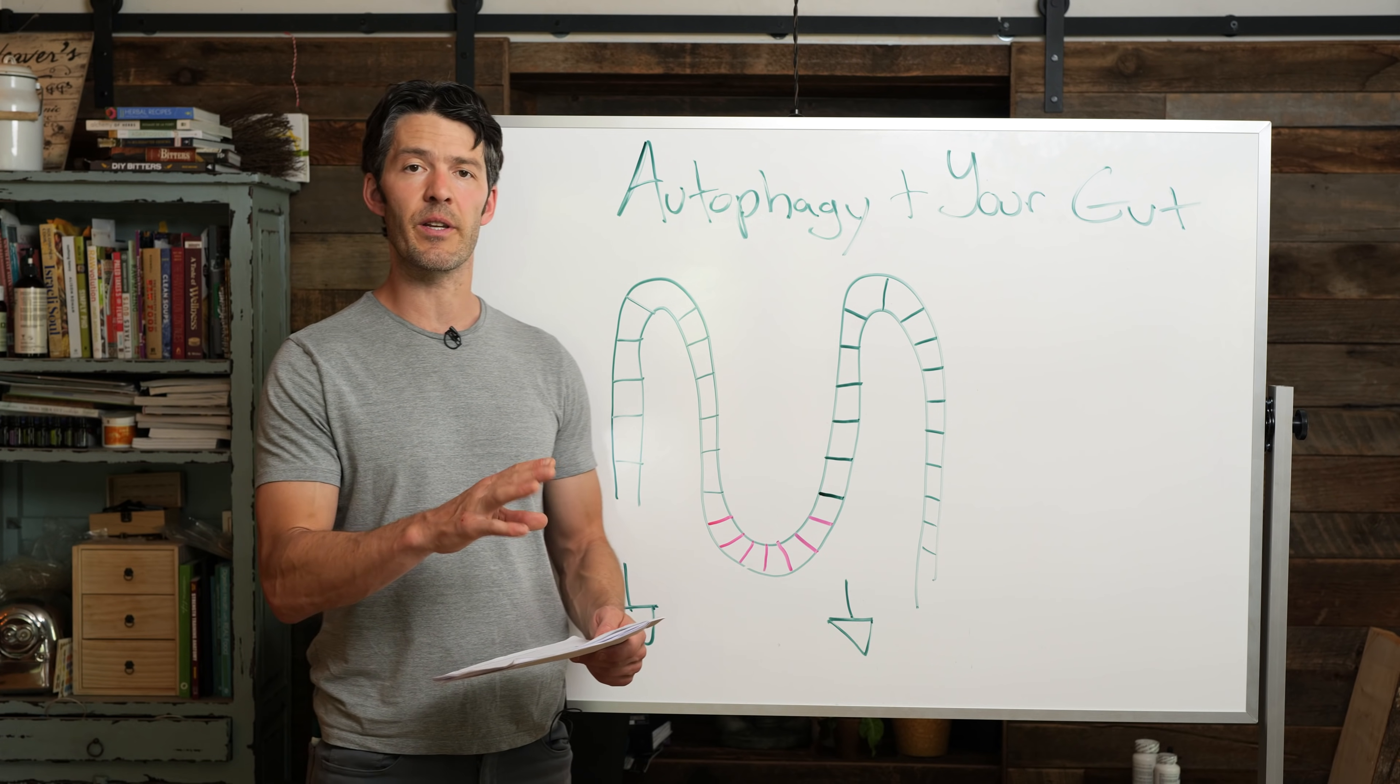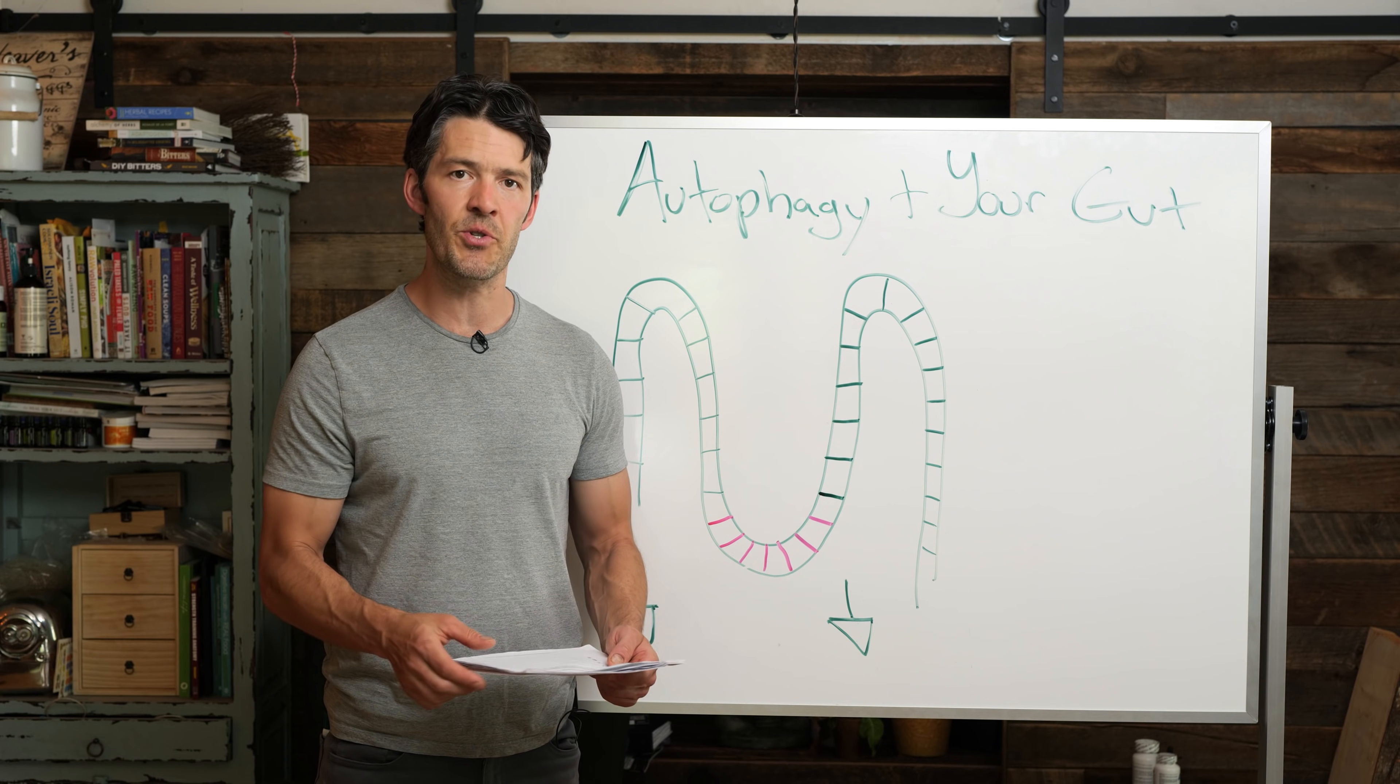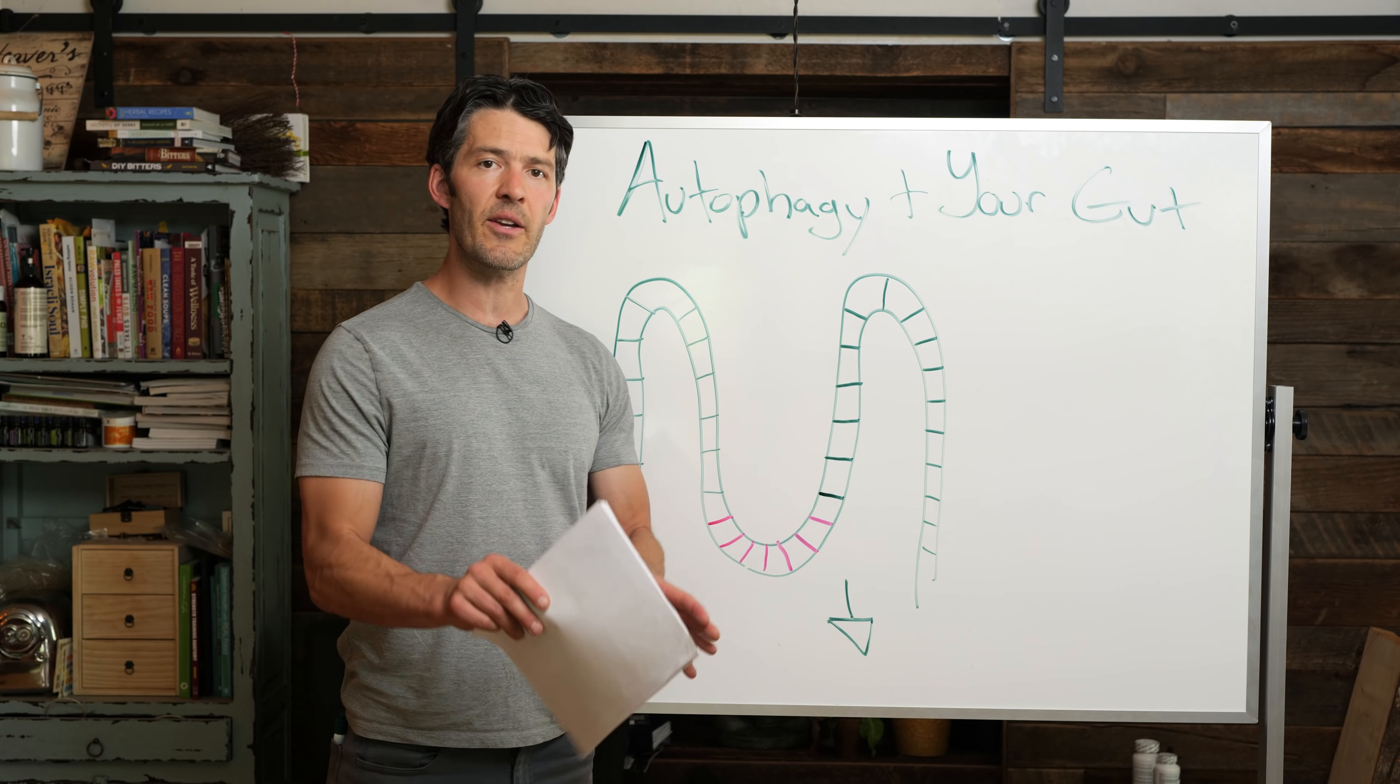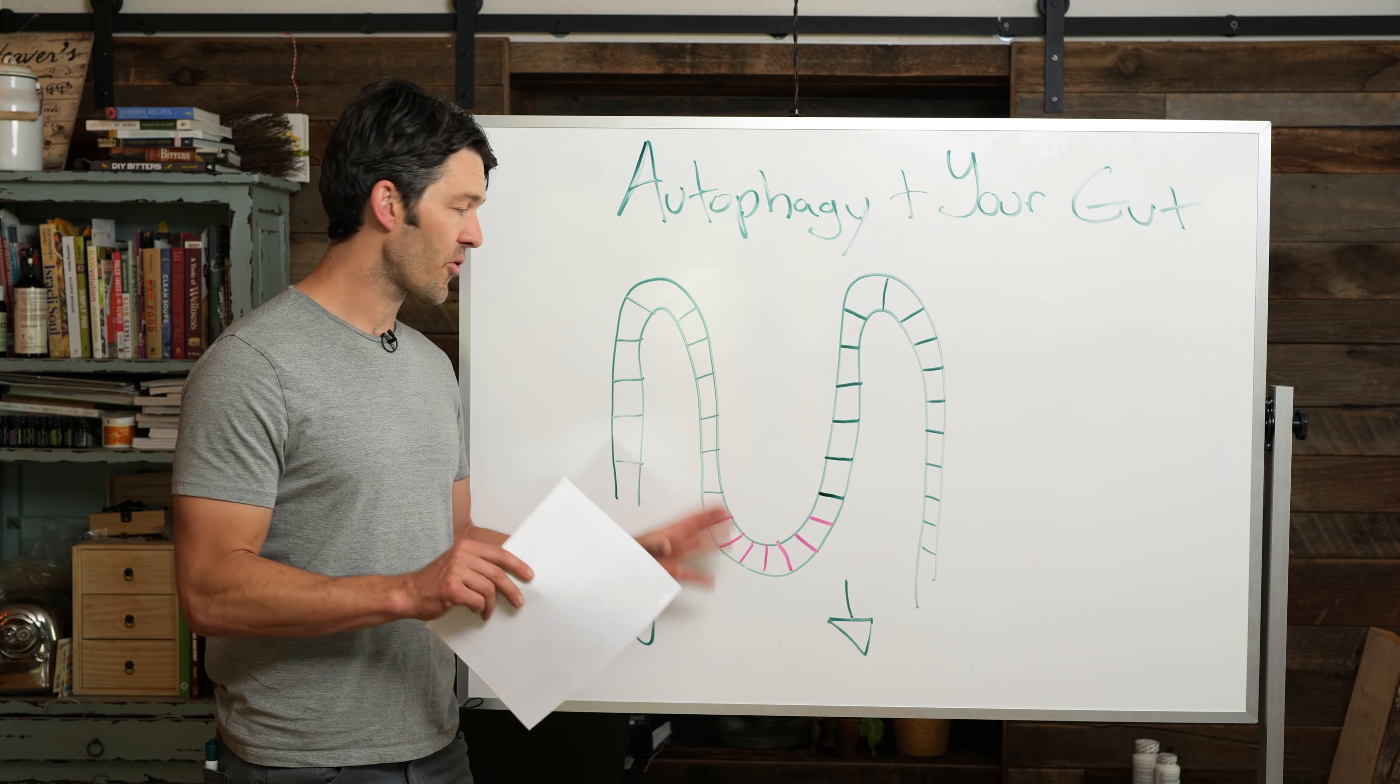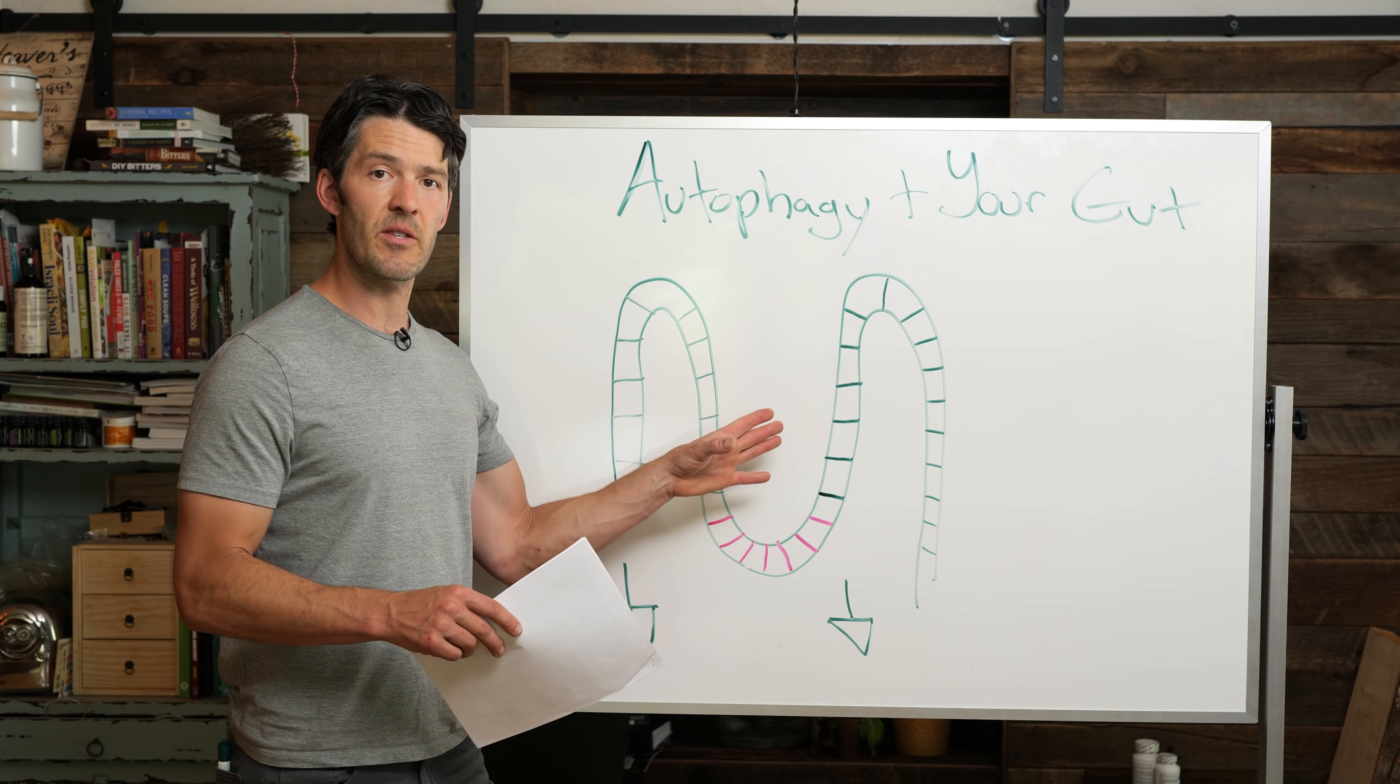When autophagy is downregulated, when you're snacking all the time, if you're not exercising, if you're over-consuming energy, if you're not stressing your body in a favorable way via exercise, this critical cell type called the paneth cell, which is responsible for secreting intestinal stem cells that help repair and regenerate your intestinal epithelium.